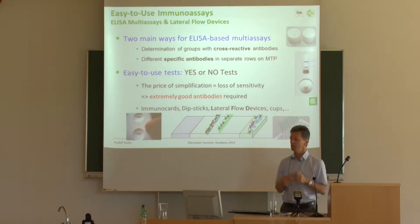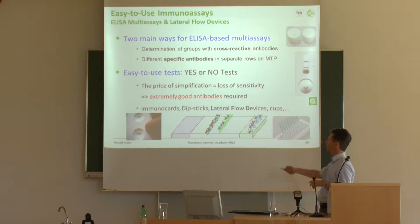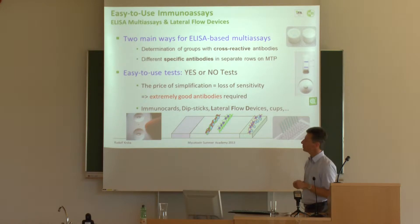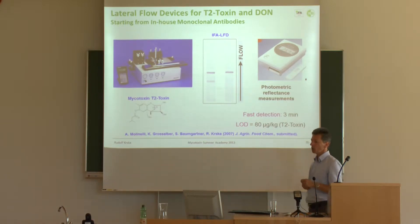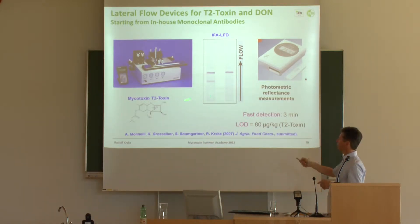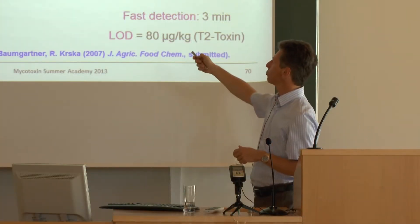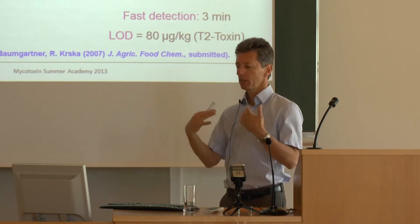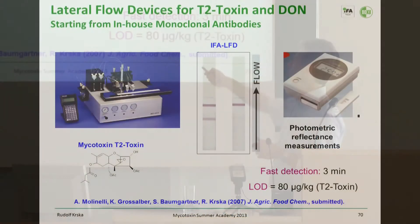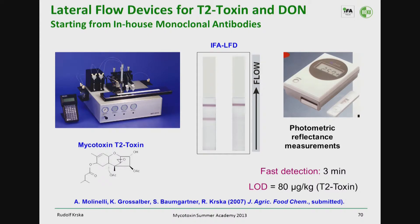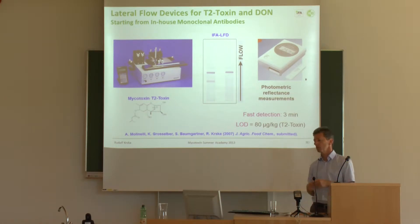Extremely good antibodies are needed for easy-to-use tests to integrate these antibodies in a dipstick, immunocards, or lateral flow device. This is how a dipstick for the mycotoxin T2 toxin can look like. You have a control line which indicates that the assay is principally working properly, and a second test line which indicates, according to its intensity, the presence of a mycotoxin. The more intense the line, the less mycotoxin, because this is a direct competitive assay.